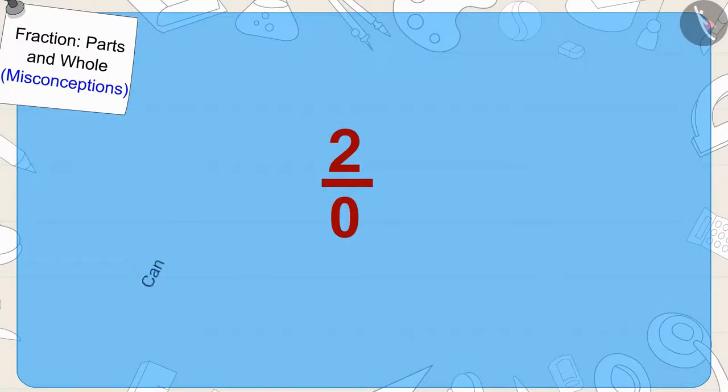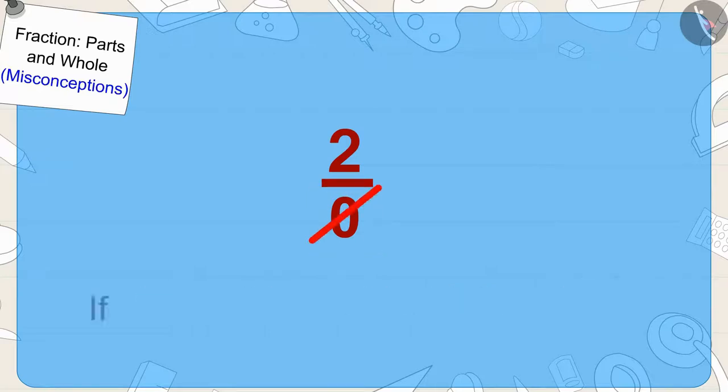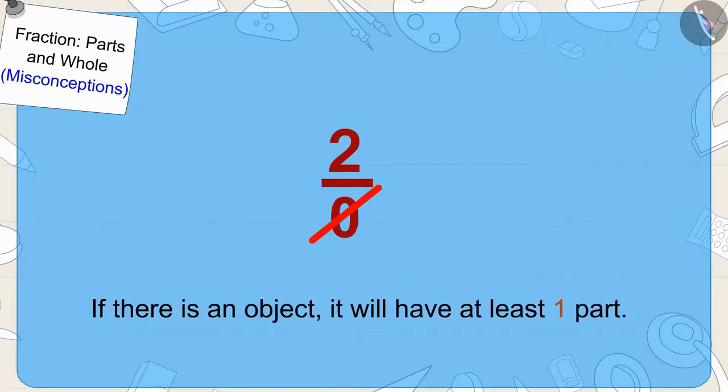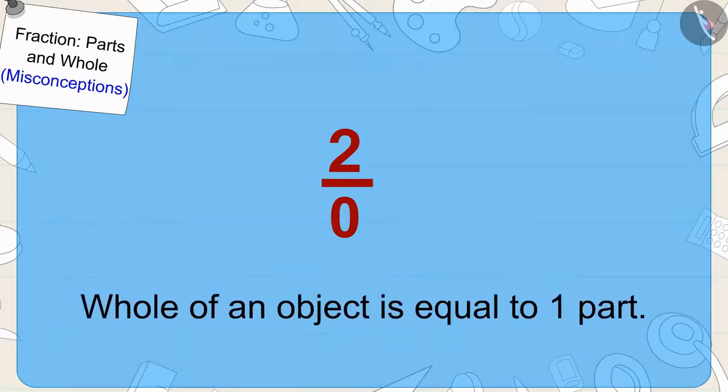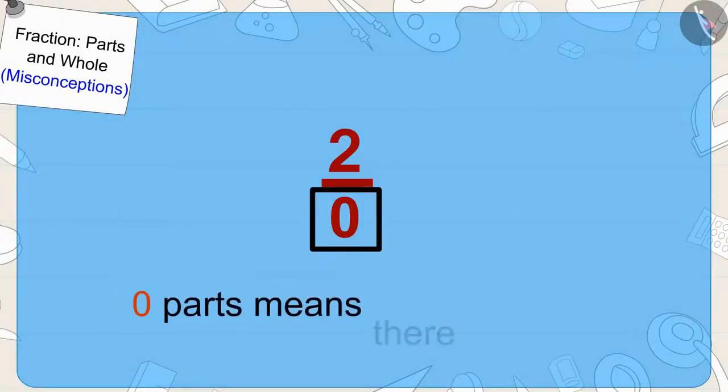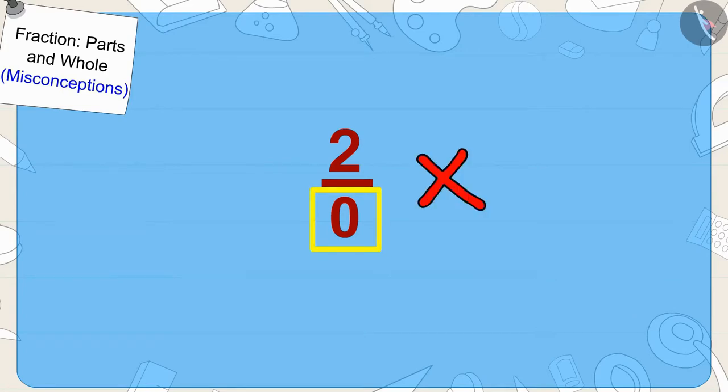Children, can we divide anything into zero parts? No, if there is an object, it will have at least one part. Because the whole of an object is equal to one part. Like, if we have this cake, we can write it as one upon one. Meaning, this whole cake is one part, and we are taking that whole portion. And zero parts means there is no part. And when there is no part, then how can we take two parts from it?